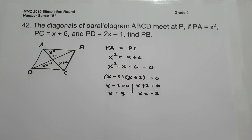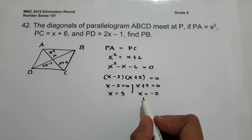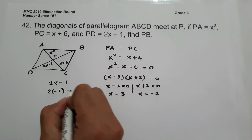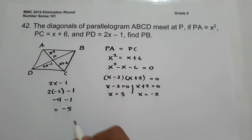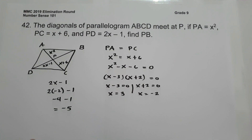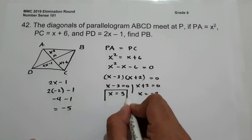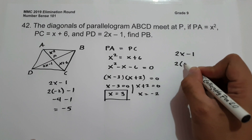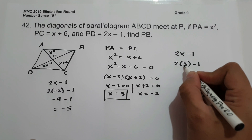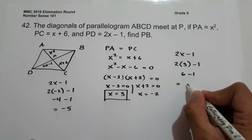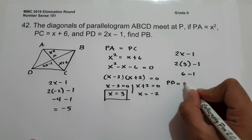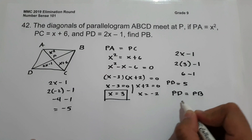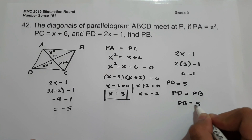Which value of x do we use? If we substitute negative 2 into 2x minus 1, we get 2 times negative 2 minus 1, which is negative 4 minus 1, giving negative 5. There is no negative measure, so the value of x we use is x equals 3. Therefore, PD equals 2 times 3 minus 1, which is 6 minus 1, so PD is 5. Since PD equals PB, PB is also 5, and this is our answer.